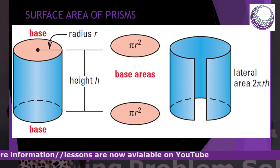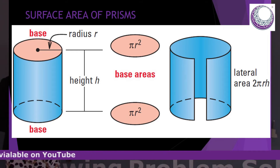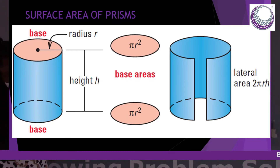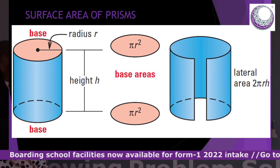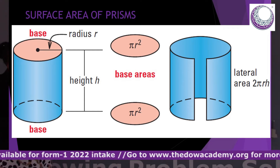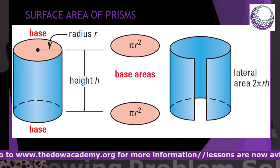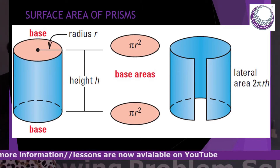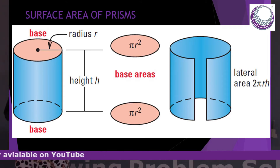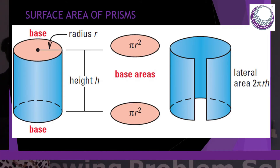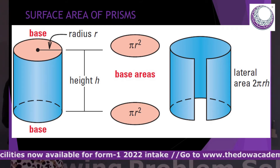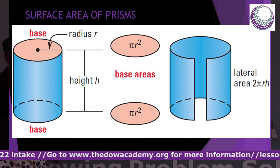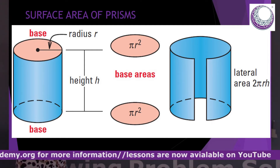Moving on to the surface area of each of these shapes — I have my cylinder here. With the surface area, we really need to pay particular attention, because this is where we consider so many things. With volume, you can just calculate without considering whether a shape is open or closed. But with surface area, since it measures the amount of surface of any given object, we have to consider all those things.